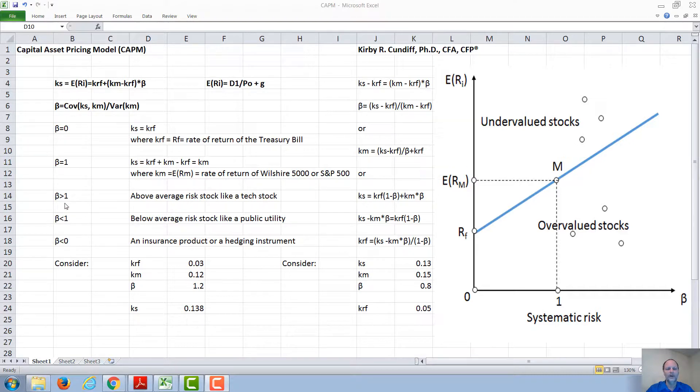A beta greater than one is an above average risk stock, like a tech stock. A beta less than one is a below average risk stock, like a public utility.